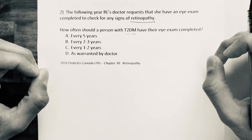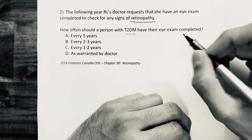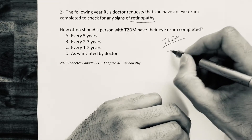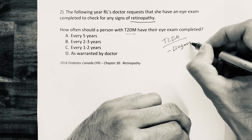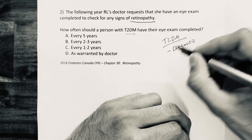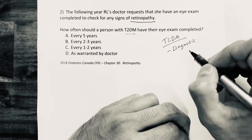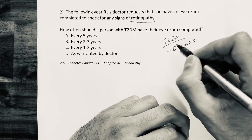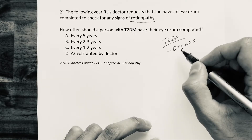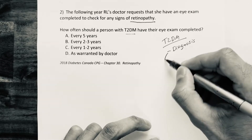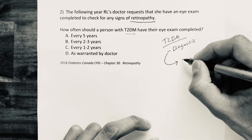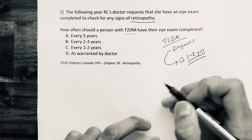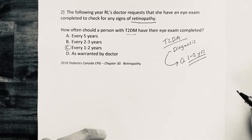Before answering, let's look at when to initiate screening for retinopathy. For a type 2 diabetic, we want to initiate screening at the time of diagnosis. If retinopathy is not present at the time of diagnosis, then we want to screen every one to two years. So our answer is C: every one to two years.